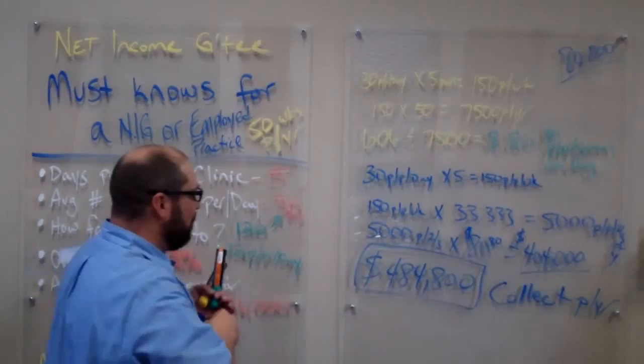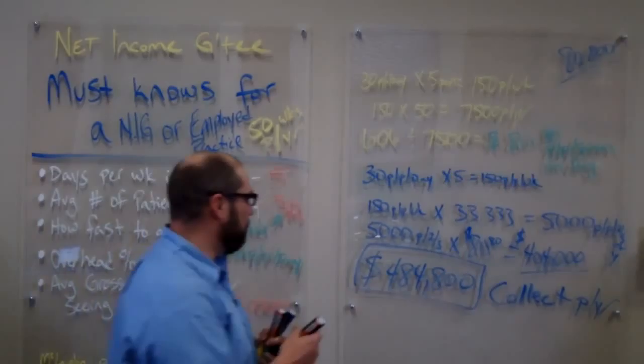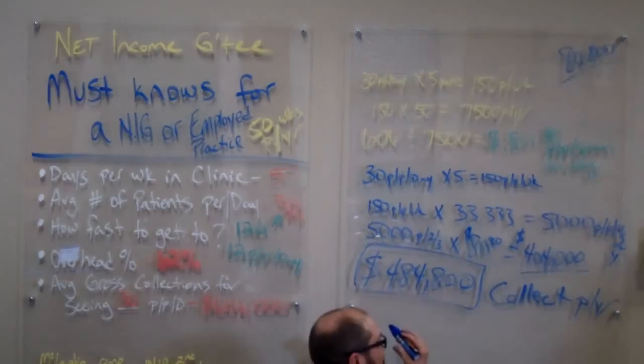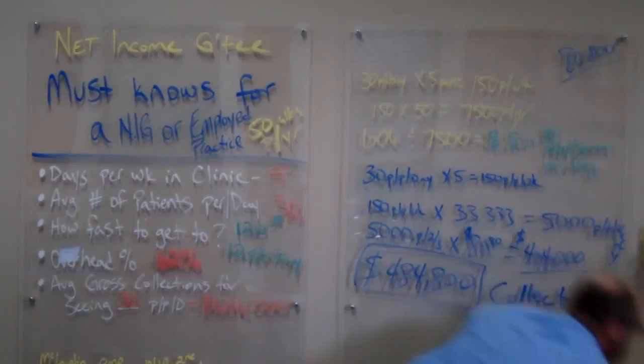$484,000 basically. Now that's our grand total of what we can collect per year. That's worst-case scenario. Now we've got to take $484,800 and we've got to multiply it by 0.62 to find out what our overhead percent is going to be.